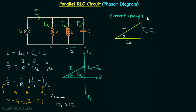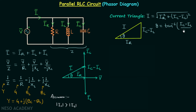From the current triangle we can say that I equals the square root of IR² plus (IC minus IL)². The power factor angle θ equals tan⁻¹ of (IC minus IL) divided by IR. The power factor cos θ equals IR divided by I. Whether it leads or lags depends on the values of L and C.